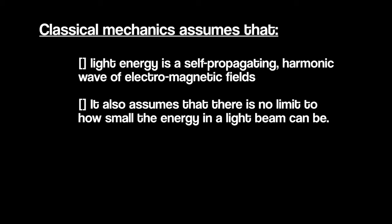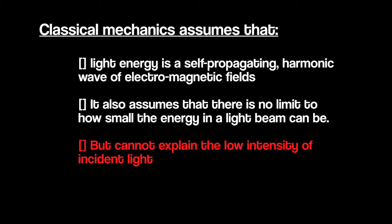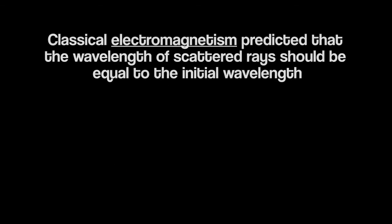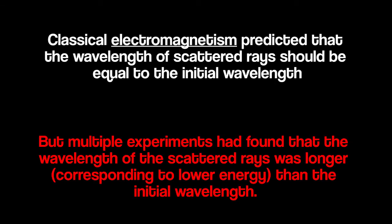But classical theory of an electromagnetic wave scattered by such particles can't explain the low intensity of incident light. In addition, classical electromagnetism predicted that the wavelength of scattered rays should be equal to the initial wavelength. But multiple experiments had found that the wavelength of the scattered rays was longer than the initial wavelength. After that, physicists were very confused and had some other explanations.